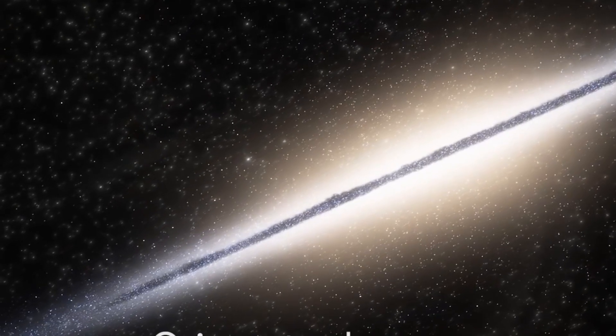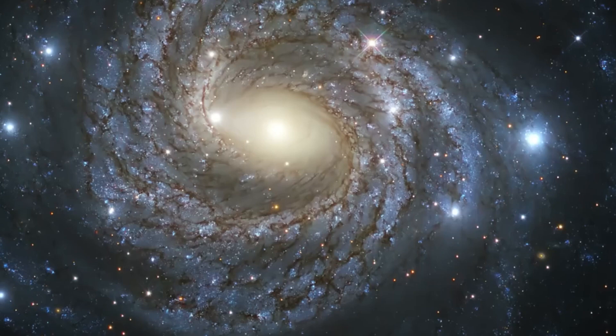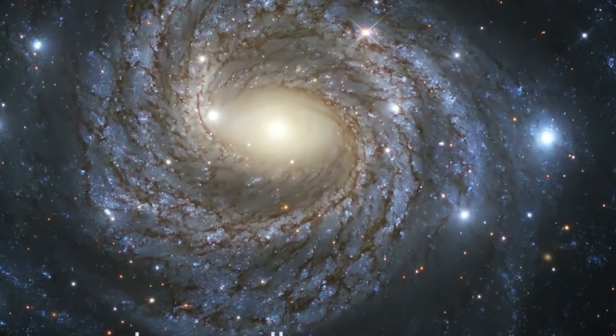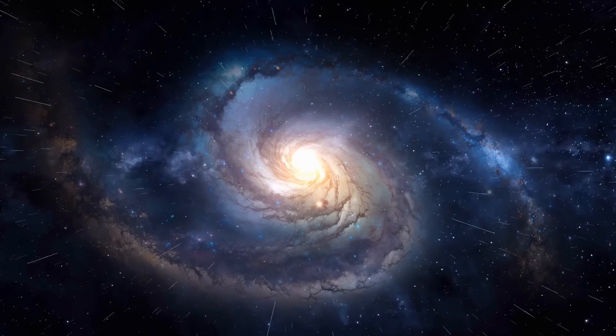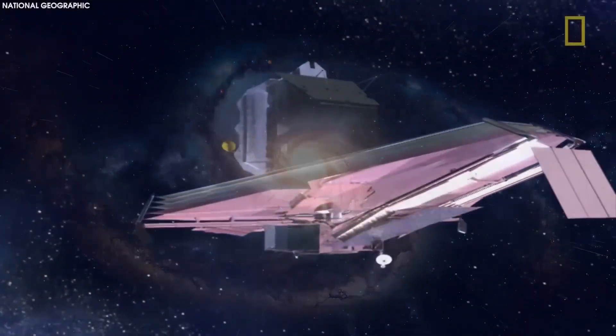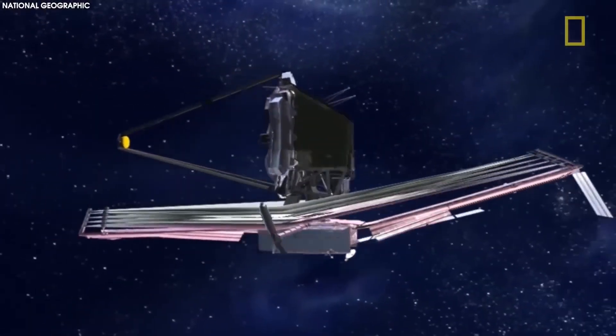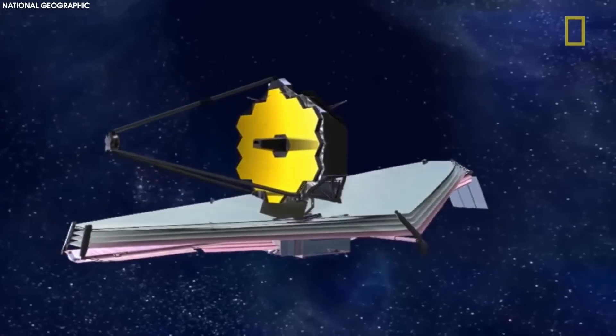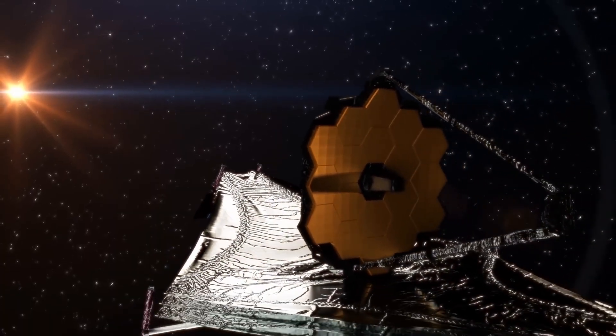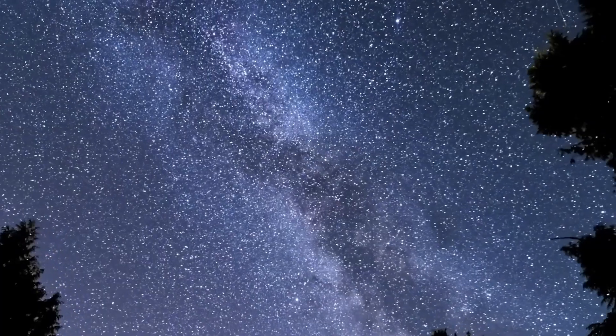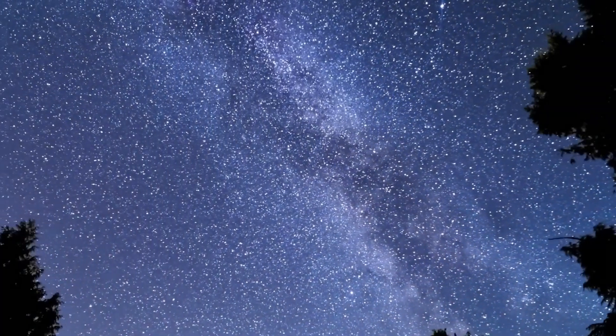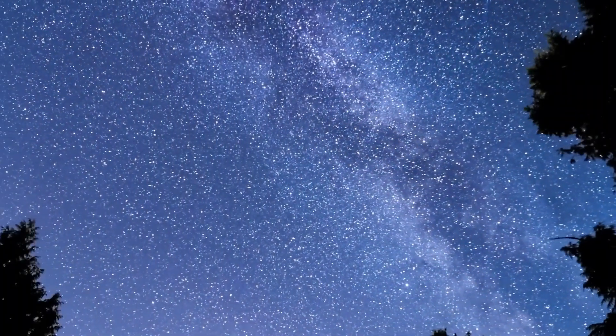Current telescopes are rarely able to do this because it requires such a high level of precision. But scientists are already planning out a next generation of space telescopes that will be able to take images of exoplanets. The next big space telescope to be launched is the Nancy Grace Roman Space Telescope, scheduled to launch in 2027. It will perform a survey of the sky to estimate how many habitable exoplanets are out there. After that comes the Habitable Worlds Observatory, scheduled to launch around 2040.